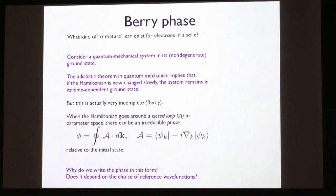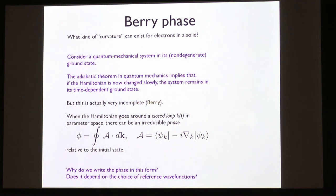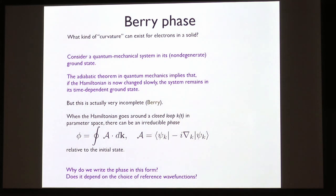The discovery that electrical polarization is closely related to the Berry phase was made at one of these workshops. A more modern example involving the non-Abelian part of the Berry phase is the magneto-electric effect. What you learn as an undergraduate in quantum mechanics — the adiabatic theorem — is only half the truth. If you take the Hamiltonian around a closed path in parameter space, you can build up a measurable phase. Crucially, it doesn't matter how fast you went around the path; it only matters the path you took.